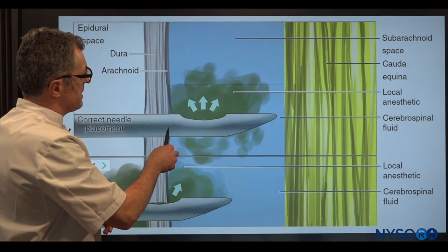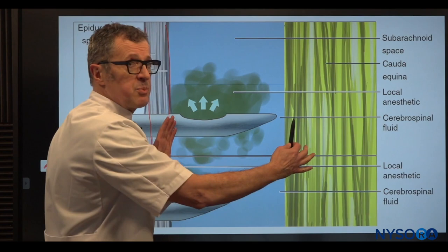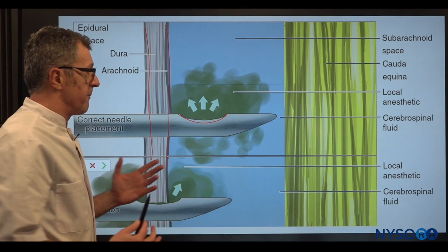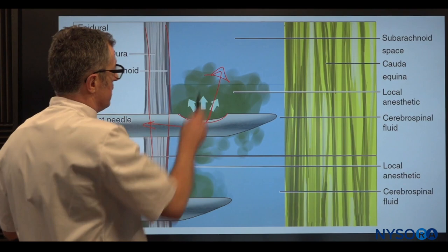This particular needle was placed well through the dura into the intrathecal space, and its opening is perfectly placed as well. You get the CSF flow back, and an injection would definitely occur into the intrathecal or spinal space.